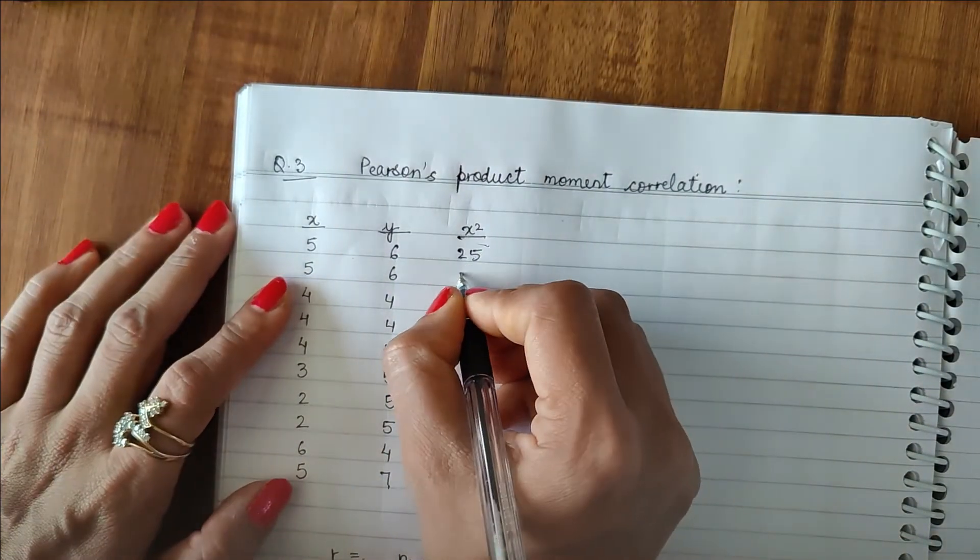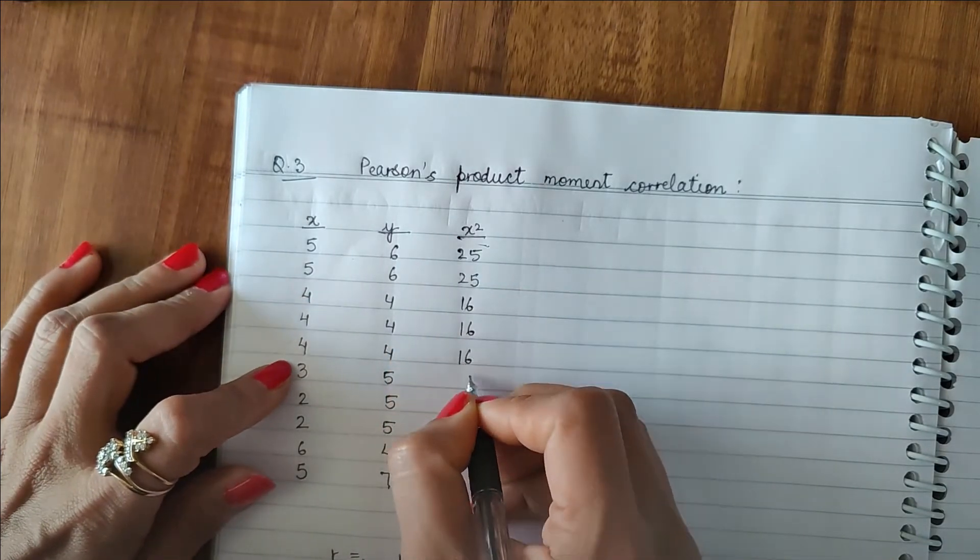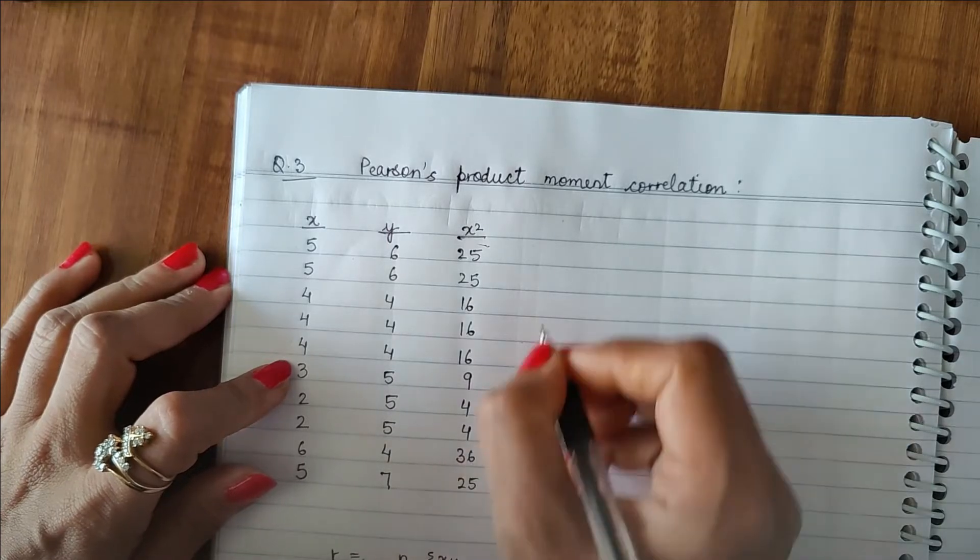X square, four fours are 16, 16, 16, 16, 9, 4, 36, 25.